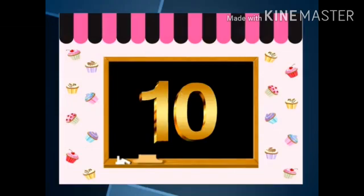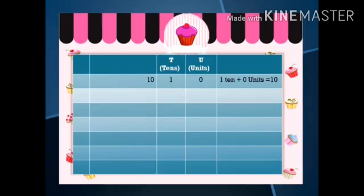Number 10 is the first double or smallest two-digit number. Two-digit numbers are placed in the tens column and in the units column of the place value chart as they have tens and units. Look at the number ten. Number ten has one tens and zero units. We can write this as ten is equal to one ten plus zero units.